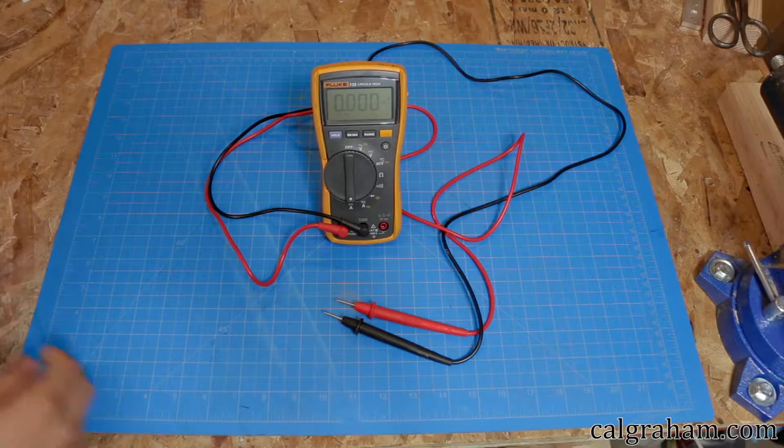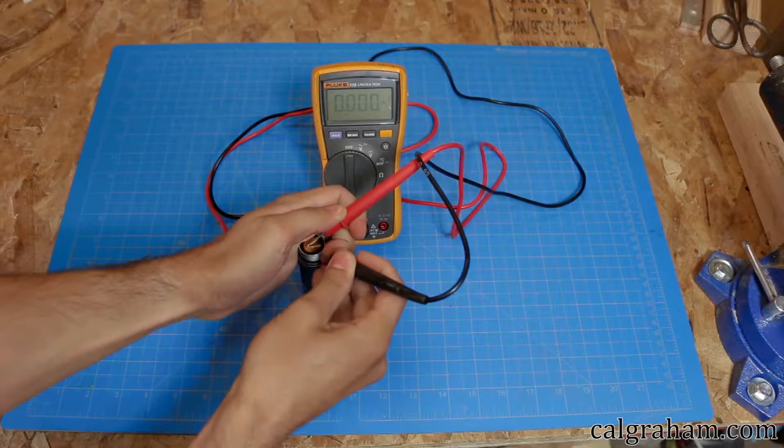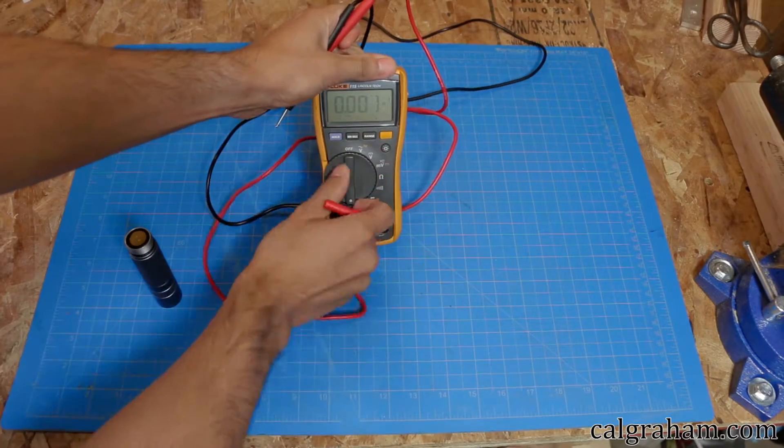I bought this Fluke 115 multimeter for $15 at a pawn shop. When I got it home, I found out that the fuse is blown. As you can see here, there is no current flowing through the flashlight and multimeter.